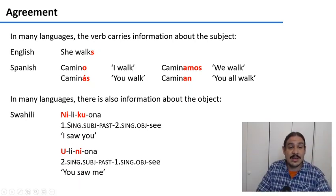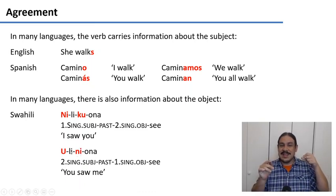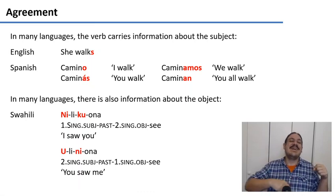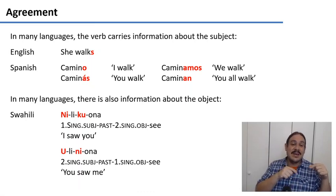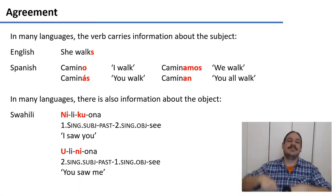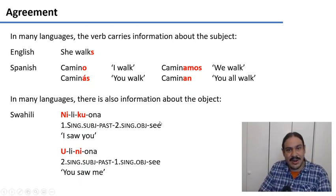In ulinjona, 'u' tells you that it's you who is doing the seeing. 'Li' is the past. 'Ona' is see. And 'me' is telling you that the one who's getting seen is me. So ulinjona means 'you saw me.' As you can see, the verb agrees with both subject and object.